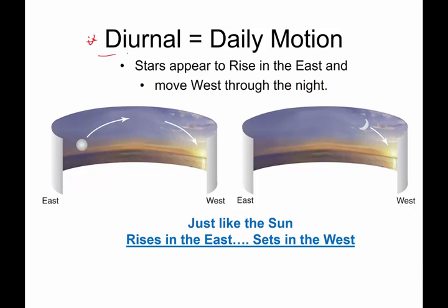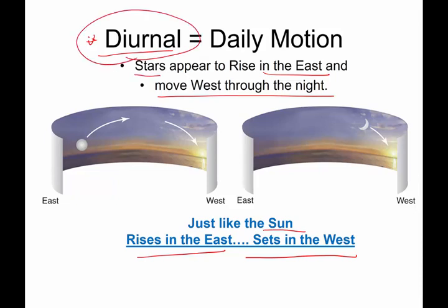Now, you need to know this word: diurnal. Diurnal means daily motion, the daily motion of the stars rising in the east and moving west through the night. Stars follow a similar path that the sun does. You've known since you were a small child that the sun rises in the east, sets in the west. Stars appear to do the same thing. The reason for this similar pattern for the stars and the sun is because of the rotational motion of the Earth.